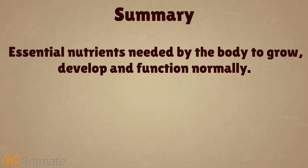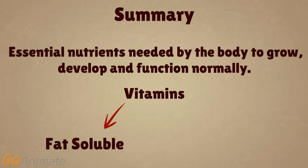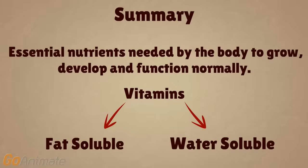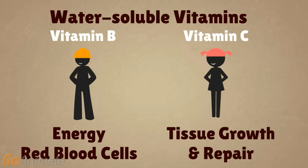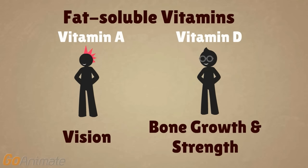Vitamins are essential nutrients needed by the body to grow, develop, and function normally. The two types of vitamins are fat-soluble and water-soluble vitamins. We discussed two water-soluble vitamins, vitamin B, involved in the production of energy and red blood cells, and vitamin C, which is associated with tissue growth and repair. We also discussed two fat-soluble vitamins, vitamin A, which plays a role in vision, and vitamin D, which is involved in bone growth and strength.